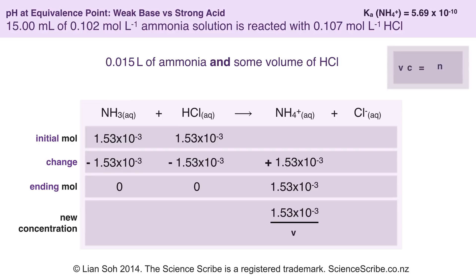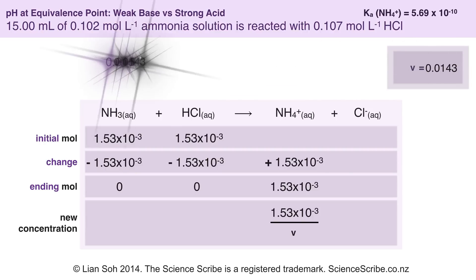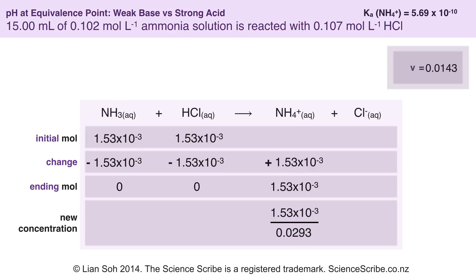Using C = N/V rearranged to give V, I know the moles of HCl from the ICE table and the concentration of HCl from the question. Substituting those values in tells me I needed 0.0143 litres of hydrochloric acid from the burette. This means the total volume in the flask is 0.0293 litres — about 29.3 mL. Once I substitute that volume in, I can calculate the concentration of ammonium ions.